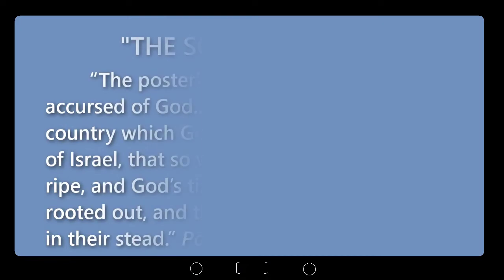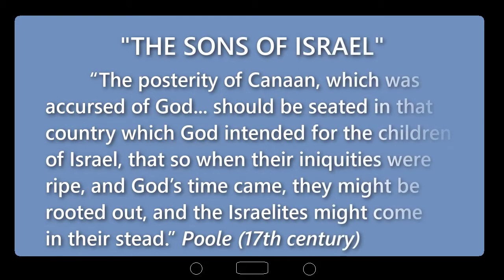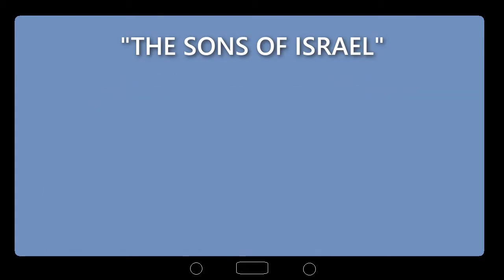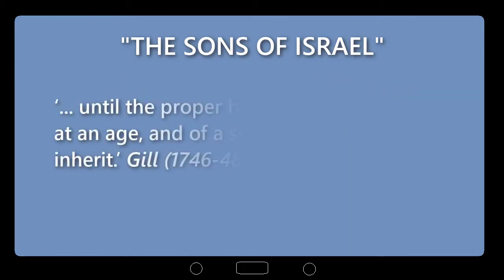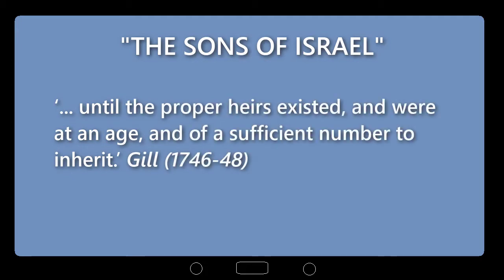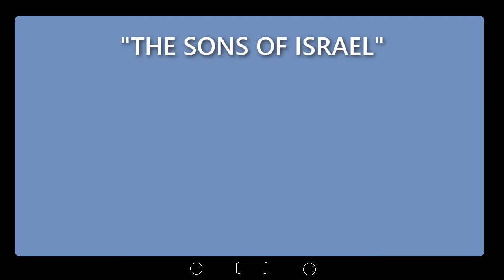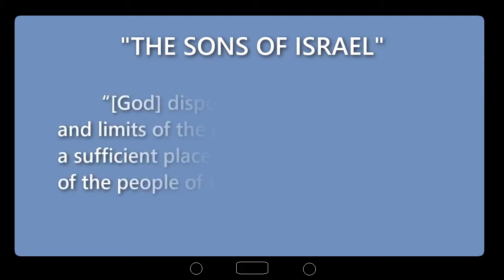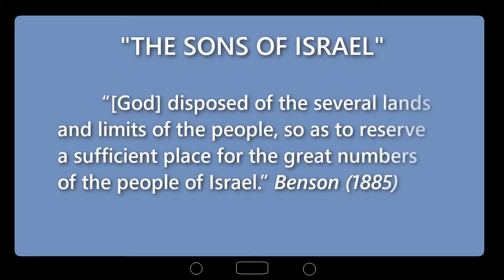Poole wrote that the posterity of Canaan, which was accursed of God, should be seated in the country which God intended for the children of Israel, so that when their iniquities were ripe and God's time came, they might be rooted out and the Israelites might come in their stead — until the proper heirs existed and were at an age and of sufficient number to inherit. Benson commented that God disposed of the several lands and limits of the people so as to reserve a sufficient place for the great numbers of the people of Israel.